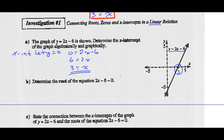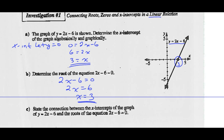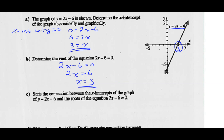Determine the roots of the equation 2x - 6 = 0. If 2x - 6 = 0, we add 6 to both sides and divide by 2. So the root of the equation 2x - 6 = 0 is x = 3. x is 3 in both cases.